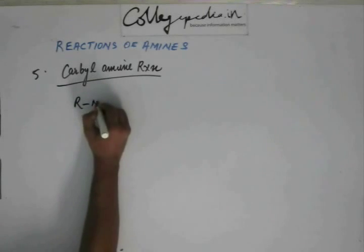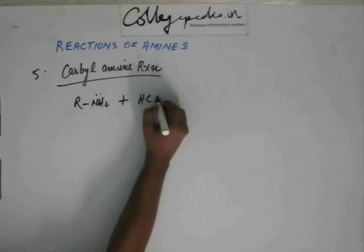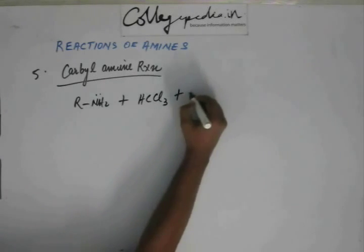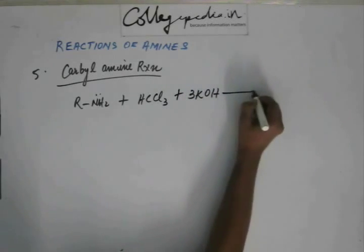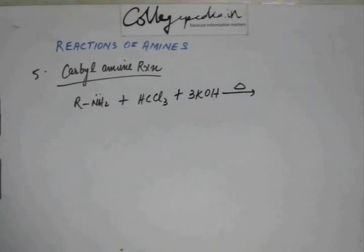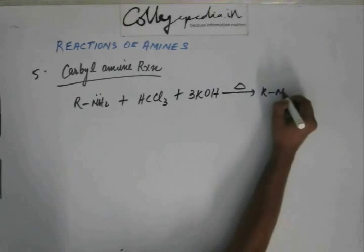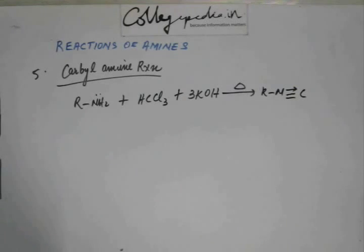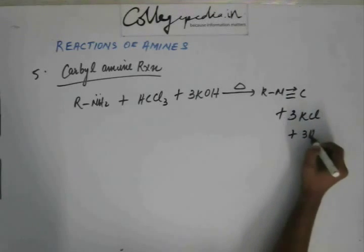What happens in this reaction is we take a primary amine. The amine necessarily has to be primary. And we take chloroform. We can take bromoform and iodoform as well for that matter. If we take chloroform and base, a little amount of heat has to be provided. You have to give heat. You'll get an isocyanide. And just to balance it, you'll have 3 KCl plus 3 H2O.